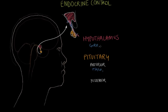Another example of how the hypothalamus controls the pituitary gland, which ultimately controls the endocrine glands, is corticotropin-releasing hormone. Corticotropin-releasing hormone stimulates the anterior pituitary's release of adrenocorticotrophic hormone, ACTH. Adrenocorticotrophic hormone goes down to the adrenal glands and stimulates the adrenal glands' release of their hormones.